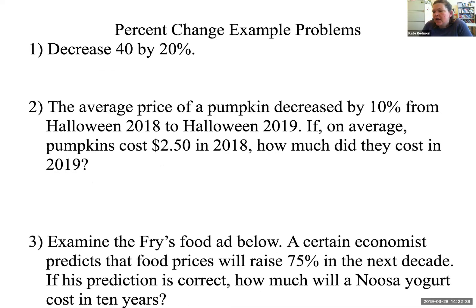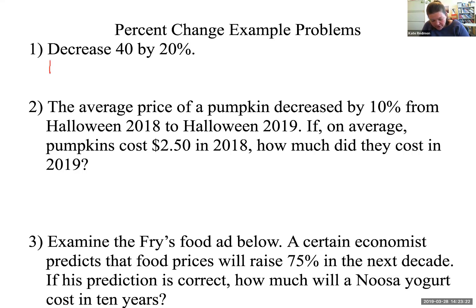Here we have example problems. Just like on the real GED, they're all over the place — we're not just practicing finding percent change mechanically; we're practicing interpreting word problems: what are they looking for, what did they give me. Number one says: decrease 40 by 20%. Most students just subtract 0.20 from 40 and get 38.8 — and that student is wrong.